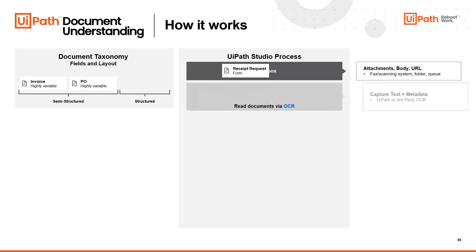When we think about the first document processing portion of this Studio process, it first starts with OCR. OCR means a lot of different things to a lot of different people, but in the case of UiPath, it's really just about extracting the text and the metadata associated with the text — things like coordinates of the text, page breaks, and other unique descriptors of the text and where it is.